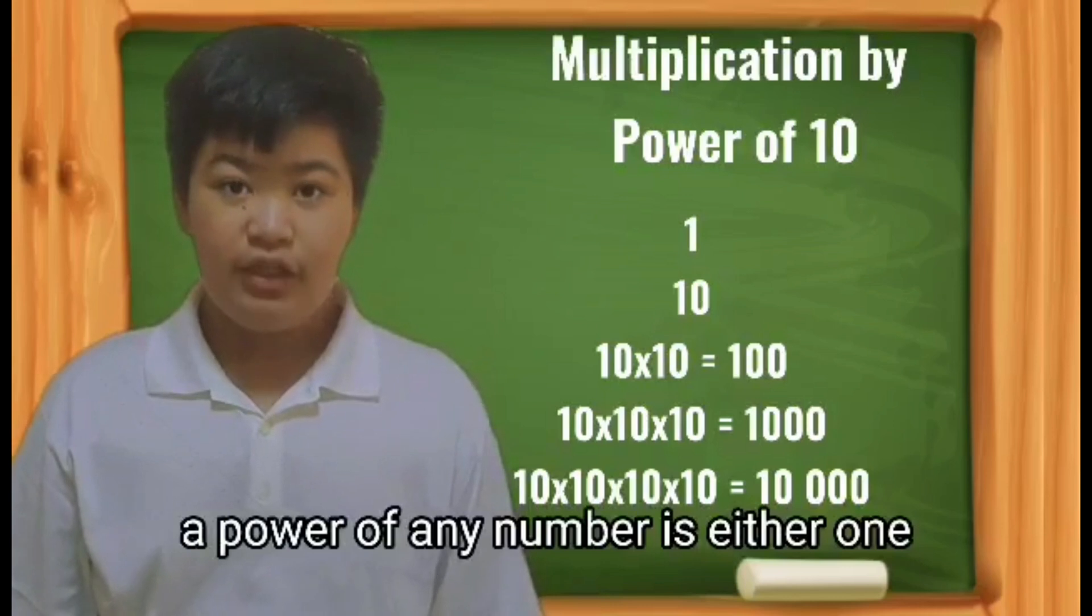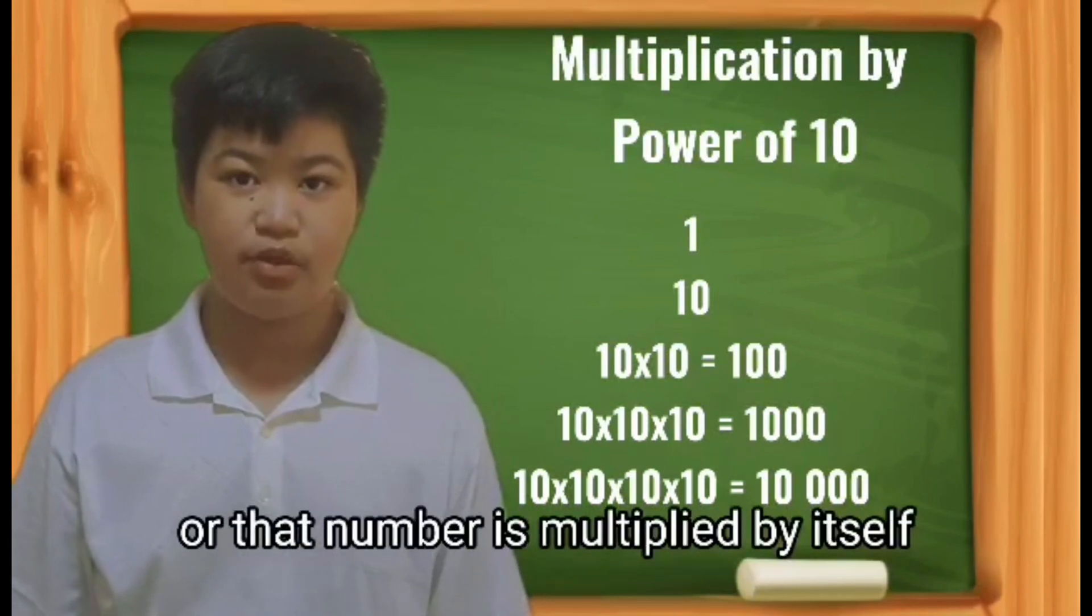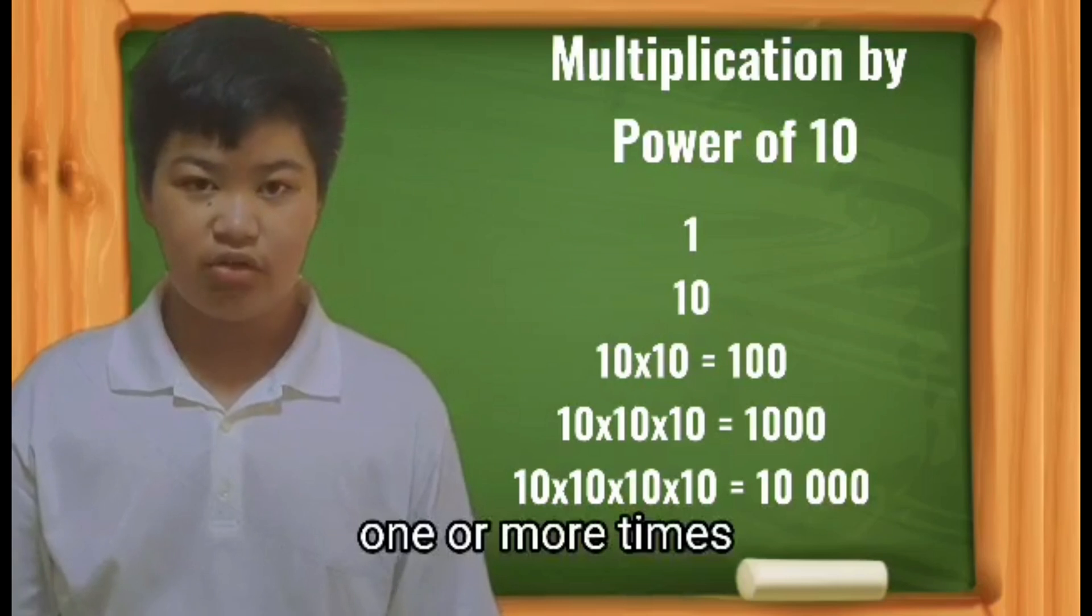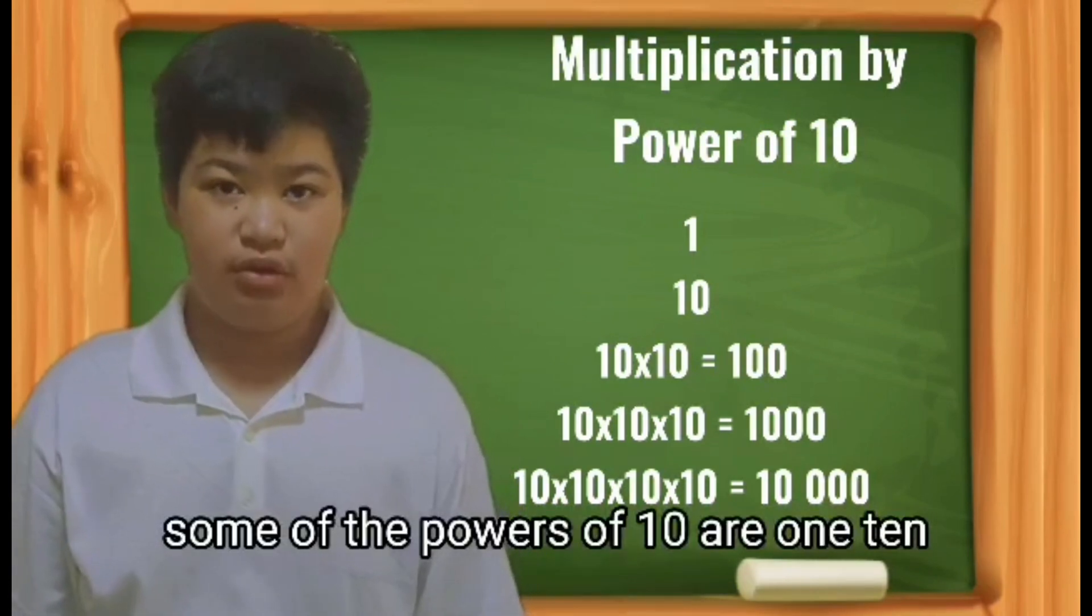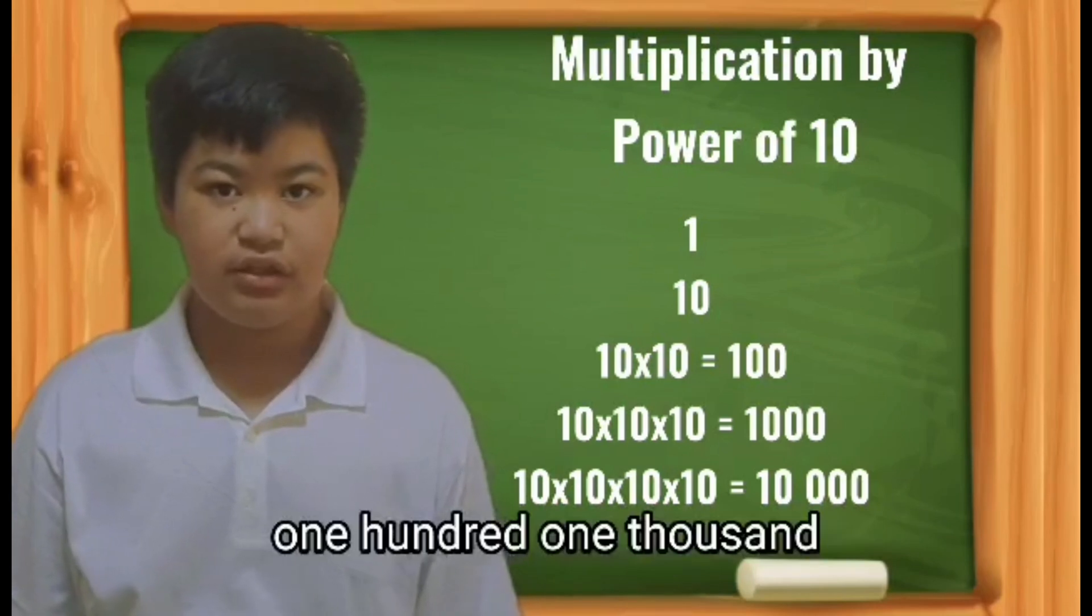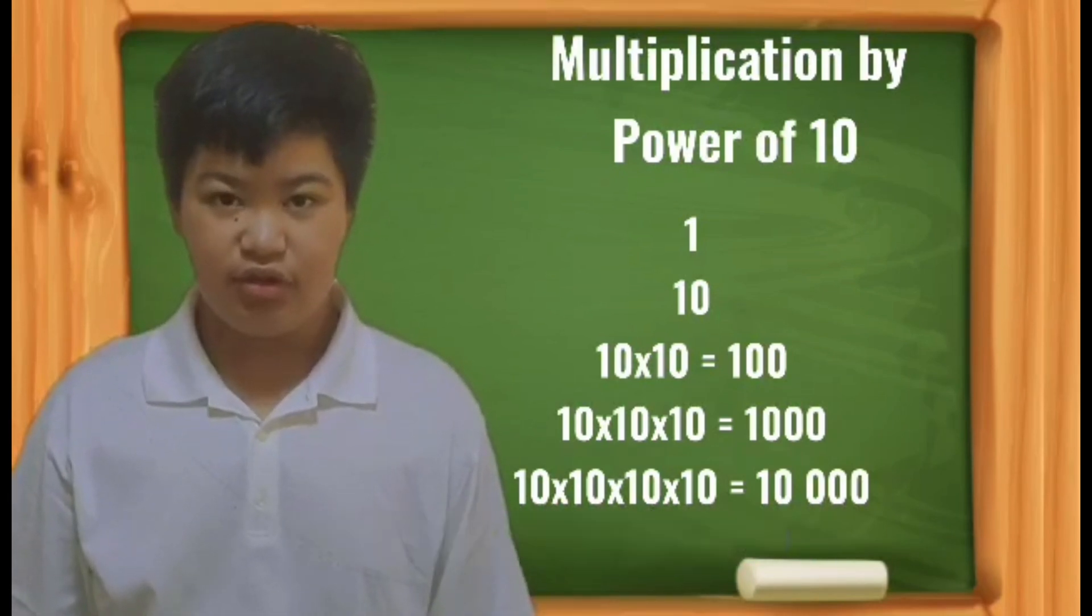A power of any number is either 1 or that number is multiplied by itself 1 or more times. Some of the powers of 10 are 1, 10, 100, 1000, 10,000, and so on.